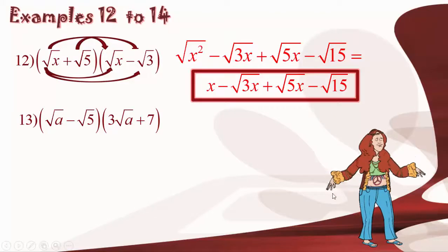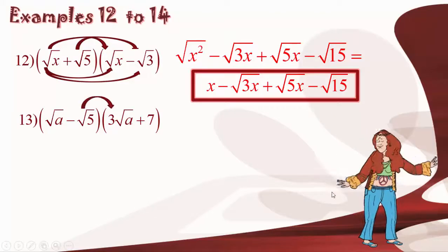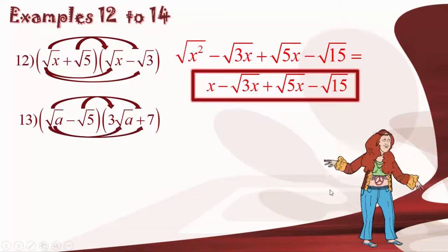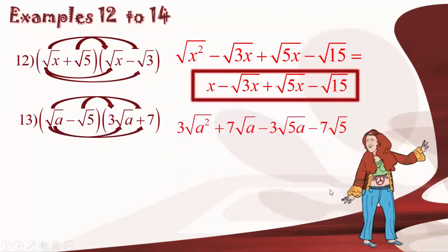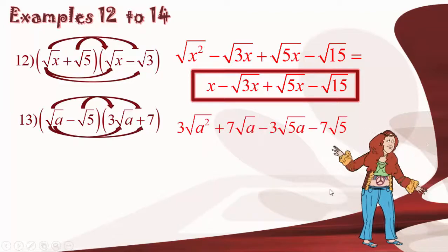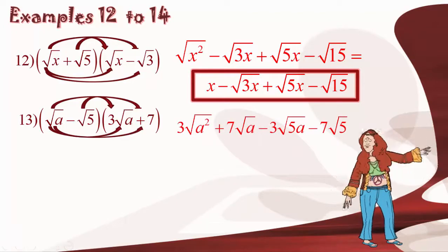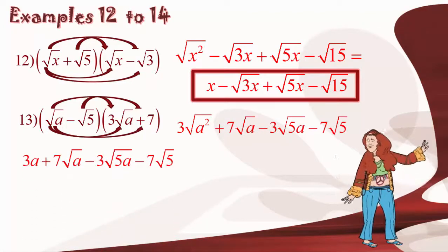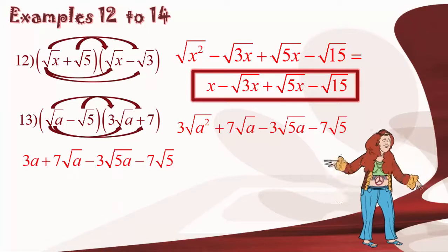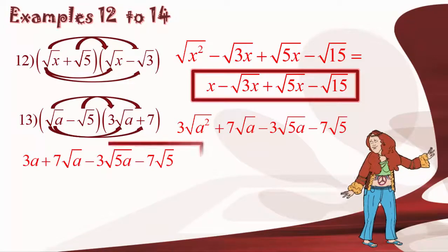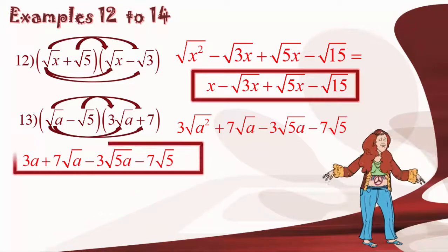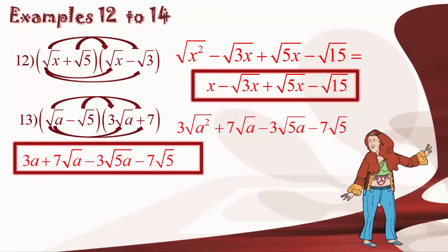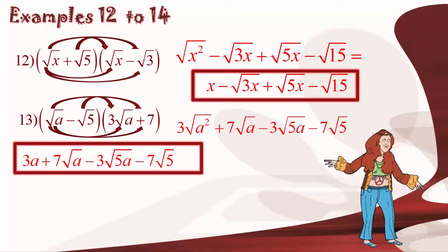Reviewing example number 13: we used the FOIL technique to expand, then separated out the perfect squares. Since we were unable to collect any like terms, this was our final answer.